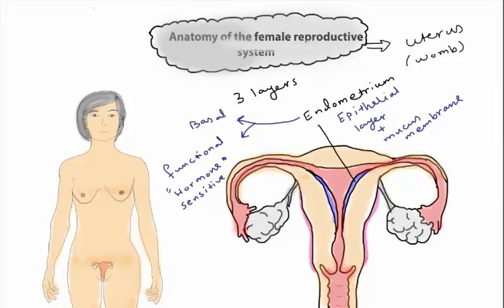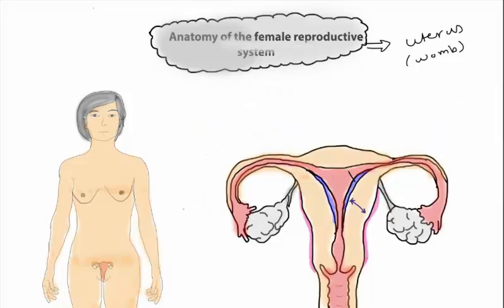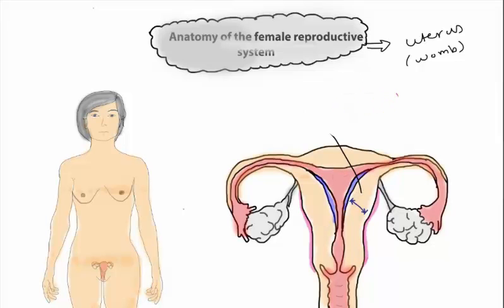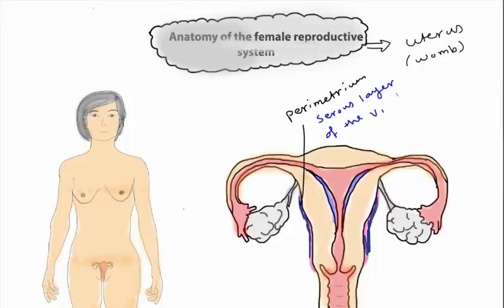The second layer is the myometrium, which is responsible for the whole thickness of the uterine wall and is composed mainly of smooth muscle. Then we have the perimetrium, which is derived from the visceral peritoneum.